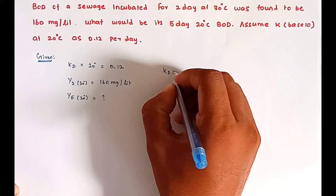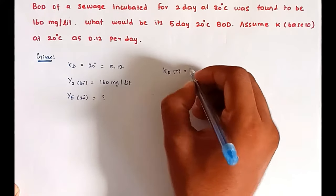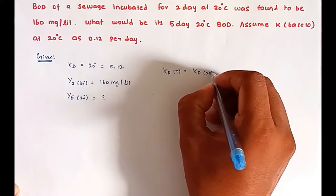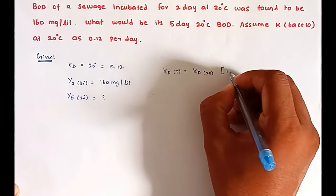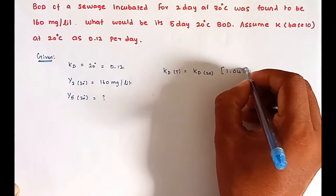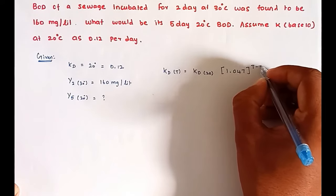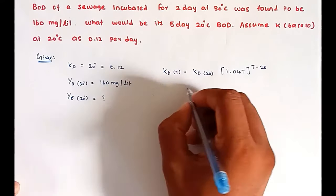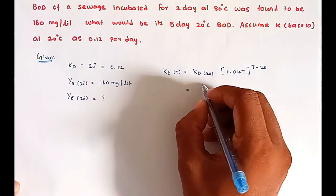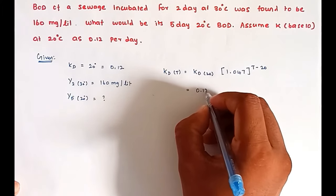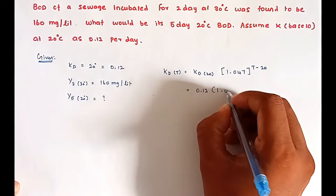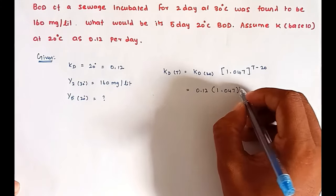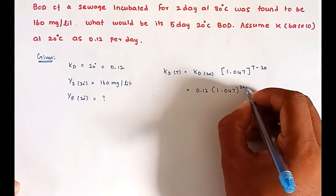KD at temperature, the formula: KD temperature equal to KD 20 degree Celsius times 1.047 power T minus 20. So this is the formula. Now we can substitute: KD 20 equal to 0.12 times 1.047 power 30 minus 20.